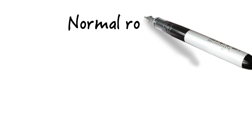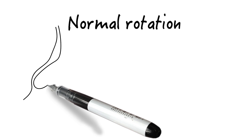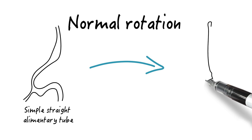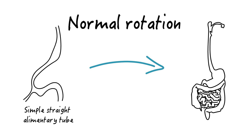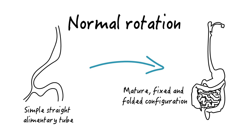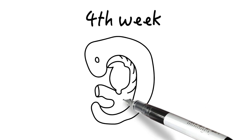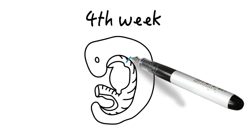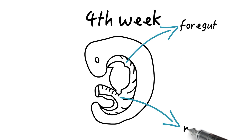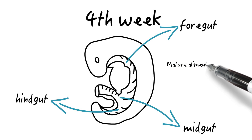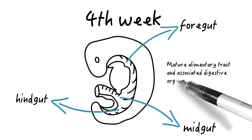Normal rotation of the intestine requires transformation from a simple straight alimentary tube into the mature fixed and folded configuration normally present at birth. The development of the midgut begins with the differentiation of the primitive intestinal tract into the foregut, midgut, and hindgut at the fourth week of gestation. The mature alimentary tract and all associated digestive organs are formed from this primitive tube.